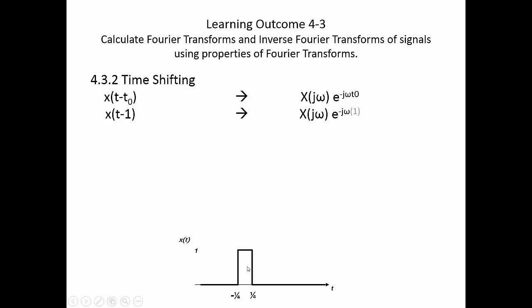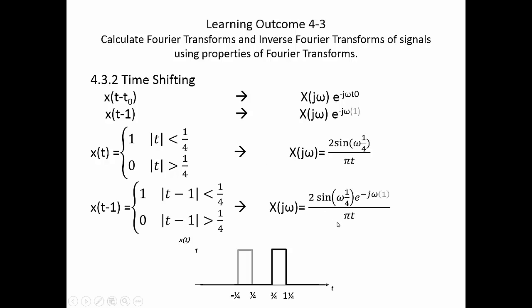Let's look at an example. Take our x of t, same one as we had a few seconds ago. If we shift it to the right by 1, the transform, this is going to be the original transform, multiplied by e to the minus j omega.